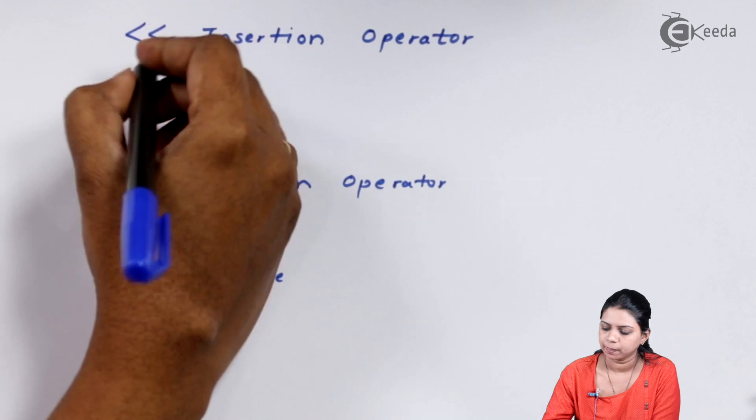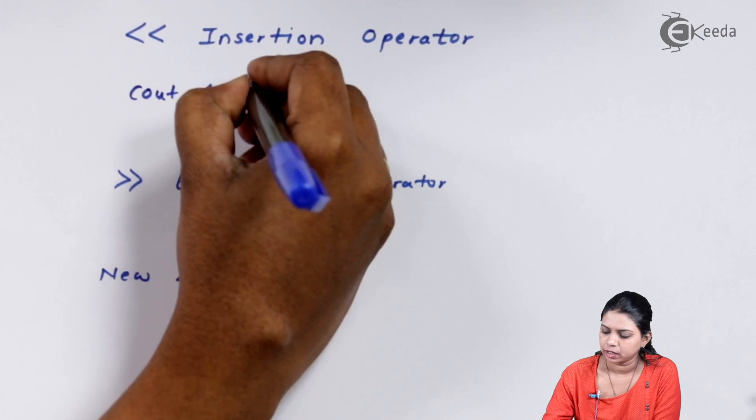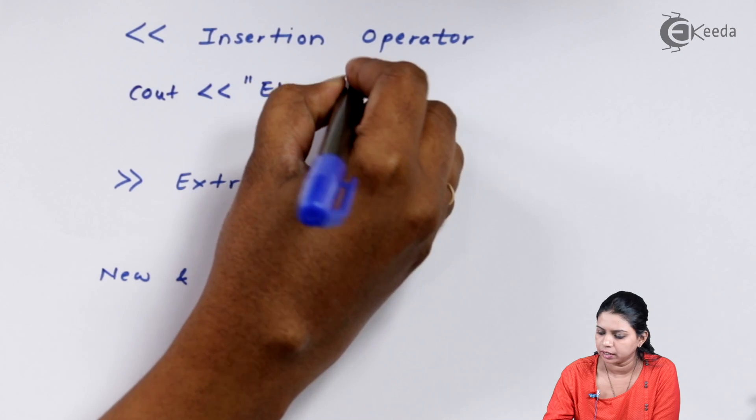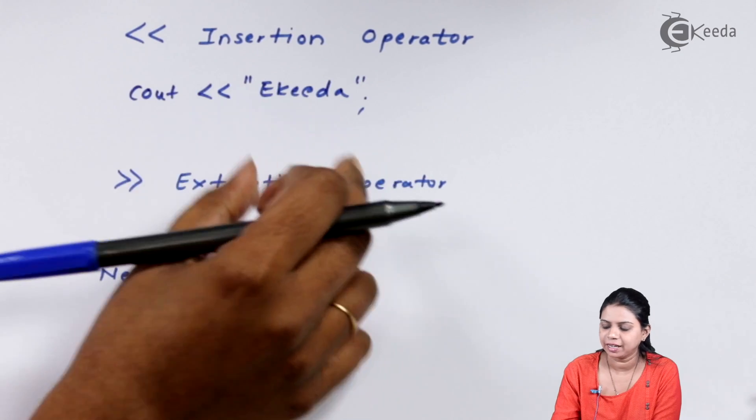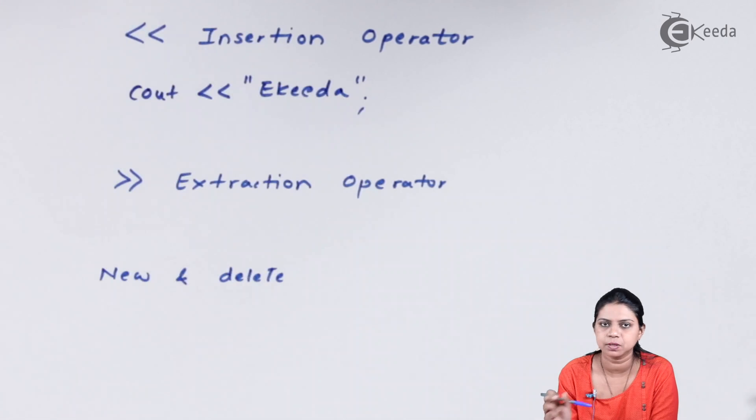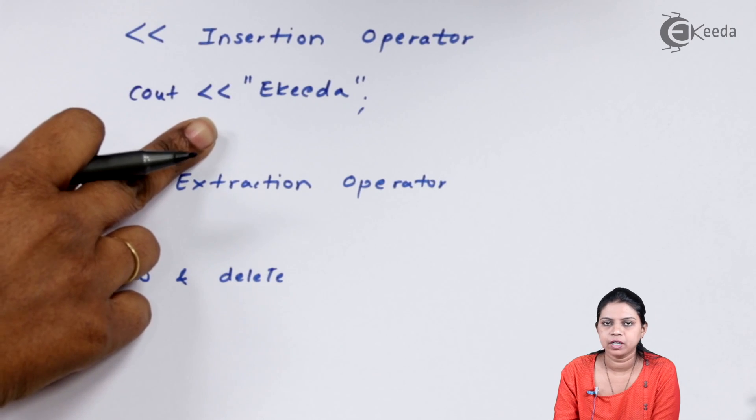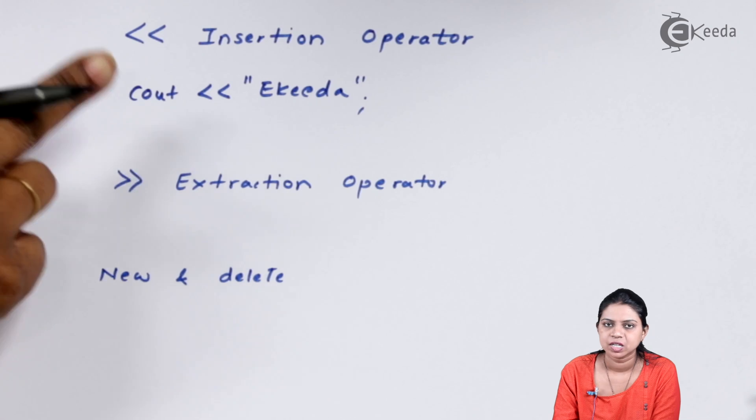For example, when I write cout insertion operator double quotes Ikeda, then what will happen? This Ikeda will get printed on the screen because it has been used along with the insertion operator, and your insertion operator should always come along with the cout function.